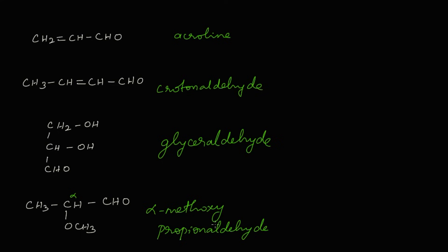Now let's write the IUPAC names for these structures. The first has three carbons — prop. There is a double bond at the second carbon, so we add 'two-en', and the first carbon bears the aldehyde, so we add AL. The IUPAC name of acrolein is prop-2-enal.